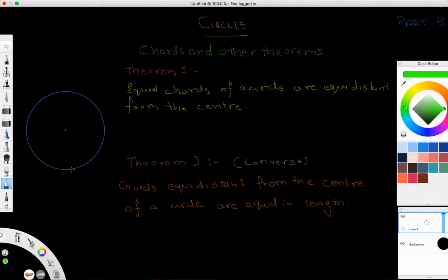Say this chord and say this chord - both are equal in length. So what is the case? That equal chords of a circle are equidistant from the center.